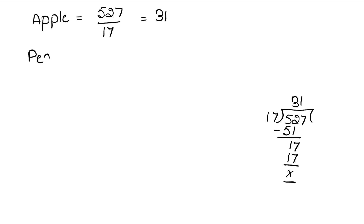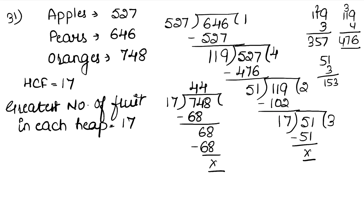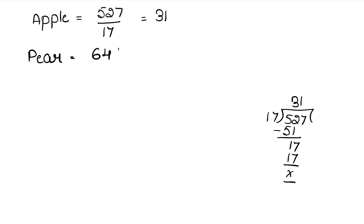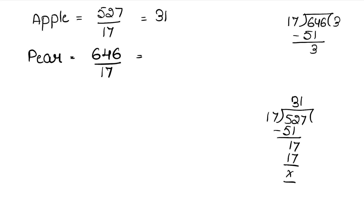Now pears — we had 646 pears, with 17 per heap. Divide 646 by 17. 17 times 3 is 51; subtract from 64, remainder 13; bring down 6. 17 times 8 is 136. So pear heaps = 38.